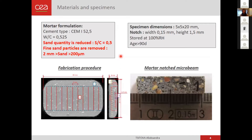The material of the study is mortar, whose formulation was adapted for in-situ testing. The cement quantity is reduced so the segmentation procedure can be simplified, and the fine cement particles are removed as they would be hard to distinguish on the tomographic scans. The specimens are microbeams with a cross-section of 5 by 5 millimeters and 20 millimeter length, and the notch is approximately 1.5 millimeters in height.